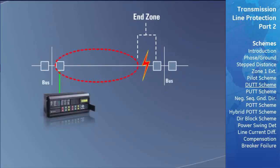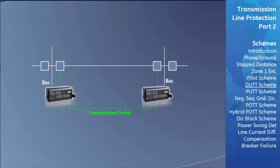A fault in the end zone of a transmission line normally will not be fully cleared until the Zone 2 time delay expires. The DUTT scheme—Direct Underreaching Transfer Trip—reduces the time needed to clear such a fault. A communication channel must be set up between the distance relays at each end of the line. This channel may have the ability to send only one bit of data, such as a power line carrier link, or multiple pieces of data, such as a fiber optic or microwave link.